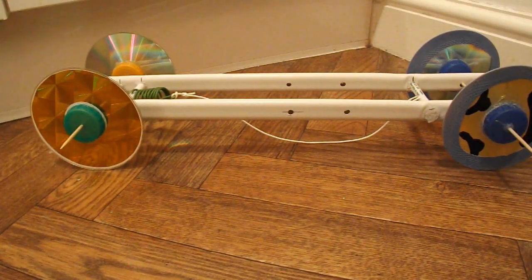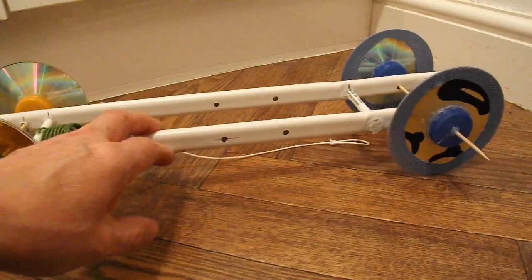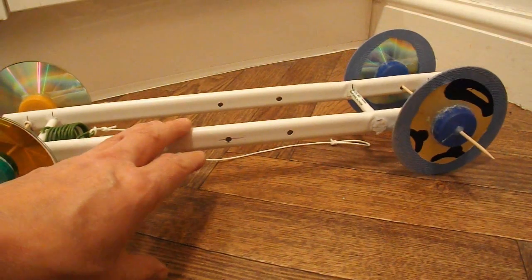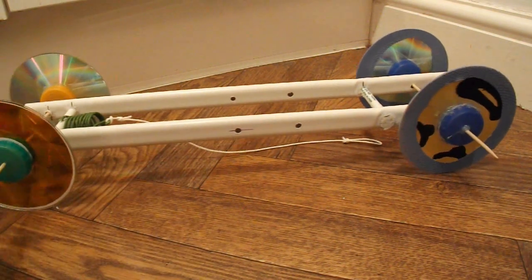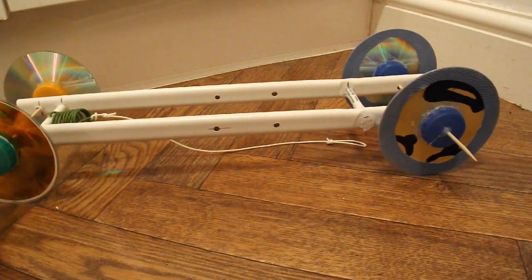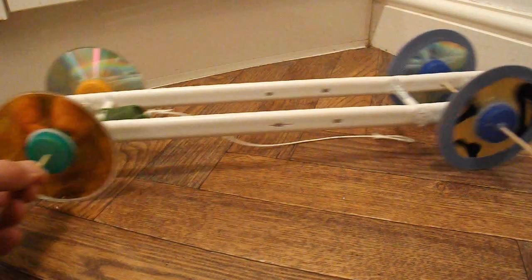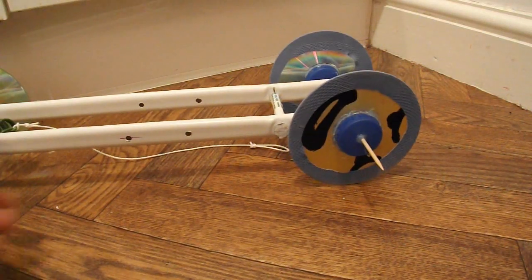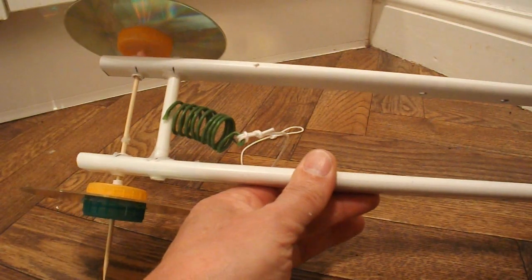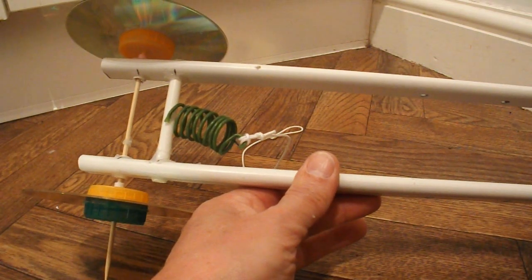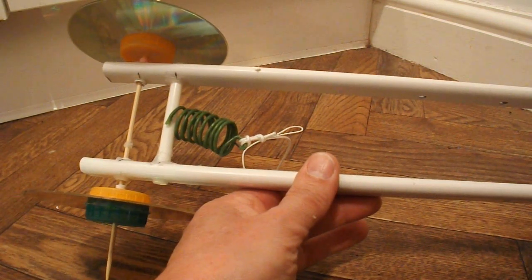Summary time. What have we got? We've got one of my old chassis from one of my old cars, four CDs for the wheels, bottle caps for the hubs, barbecue skewers for the axles. And this time we're powering it with a spring that I've made myself, just wound some wire around a piece of dowel.